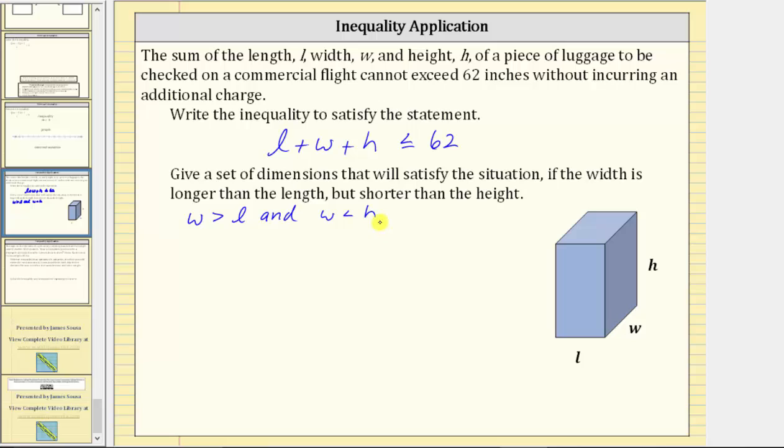So this is a compound inequality, which we can also write a second way. Notice how both inequalities contain the variable W. So we can write the variable W in the middle and say W is less than H, reading this from left to right. But starting with W going from right to left, we can also say W is greater than L.